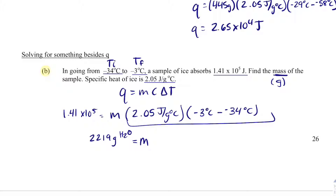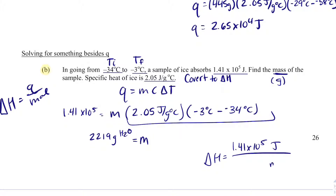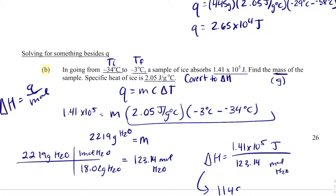Now let's convert Q to delta H. From our earlier notes, delta H equals Q divided by moles. We already have Q = 1.41 × 10⁵ joules. Converting 2,219 grams of H₂O: 2,219 ÷ 18.02 = 123.14 moles of H₂O. So delta H = 1.41 × 10⁵ ÷ 123.14 = 1,145 joules per mole.